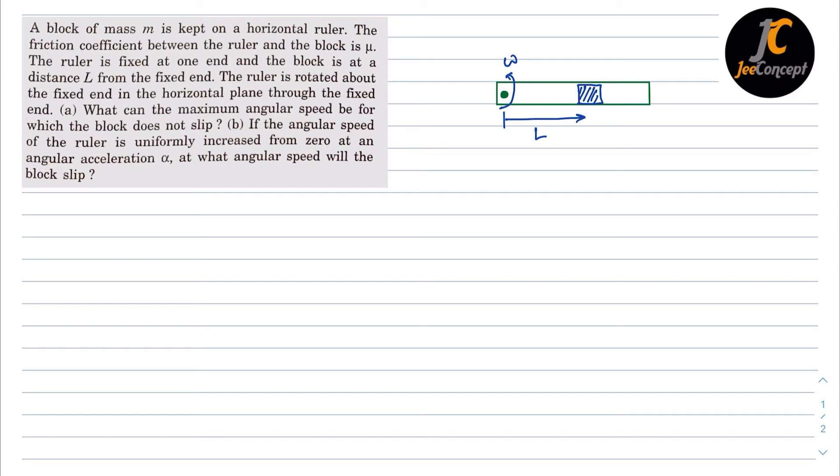So to understand the scenario, this is the ruler. The block is placed on this ruler at a distance l and the ruler is rotating along a fixed end with a velocity of omega.